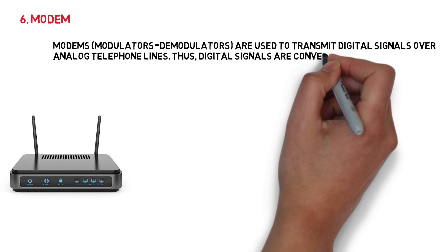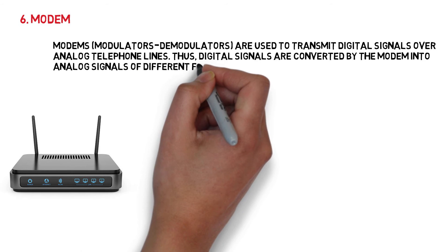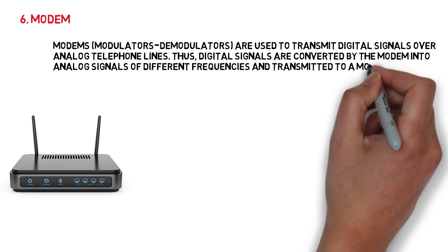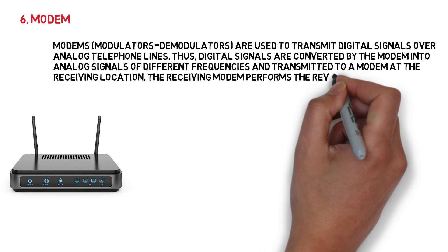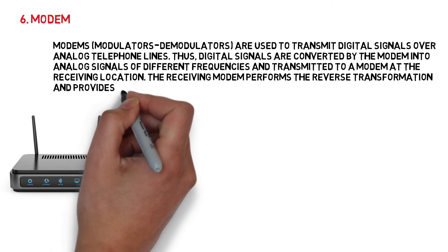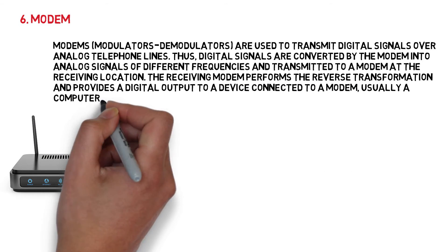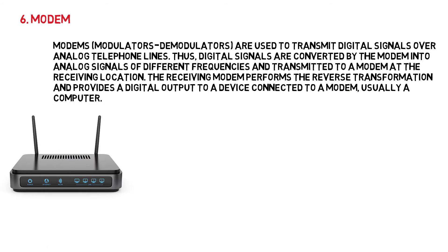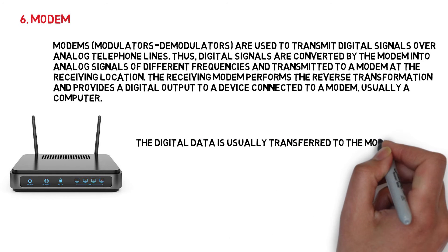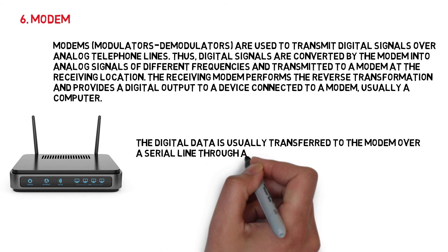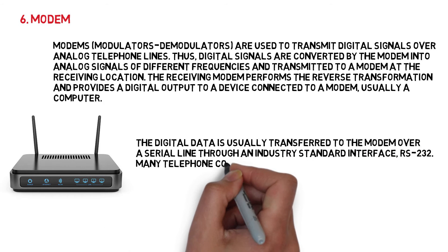6. Modem. Modems are used to transmit digital signals over analog telephone lines. Digital signals are converted by the modem into analog signals of different frequencies and transmitted to a modem at the receiving location. The receiving modem performs the reverse transformation and provides a digital output to a device connected to it, usually a computer. The digital data is usually transferred to the modem over a serial line through an industry standard interface, RS-232.